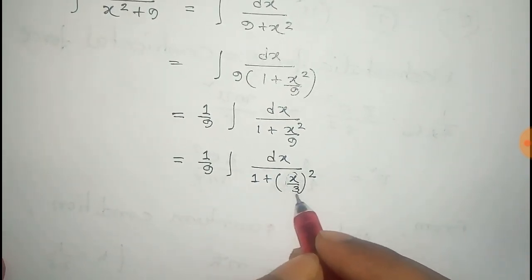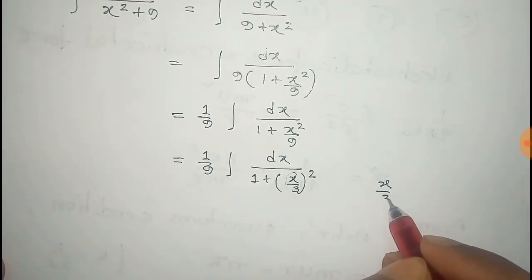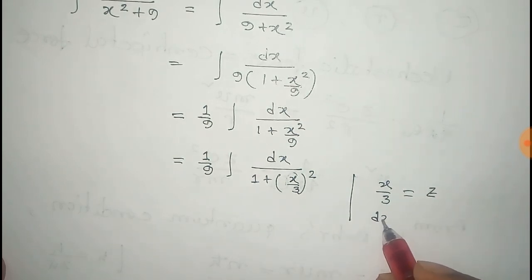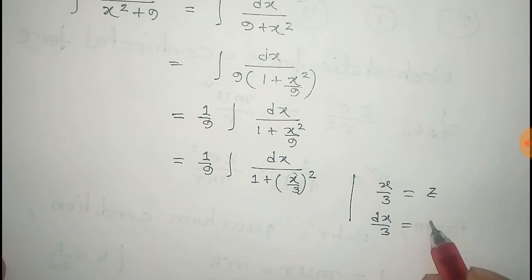Now consider this x by 3 equals z. Now differentiating on both sides of this equation we get dx by 3 equals dz, and from this dx equals 3 dz.